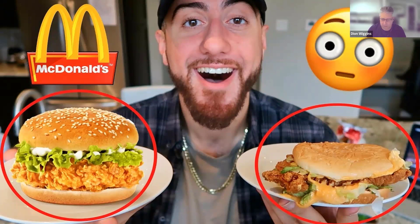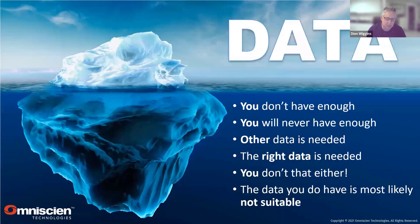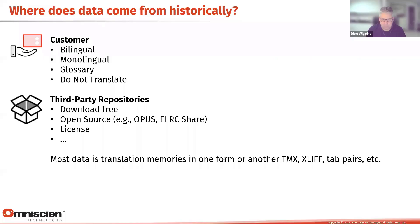When I talk about data, this will sound a little controversial: you don't have enough, and you will never have enough. Other data is needed — not just other data, the right data — and you don't have that either. The data you have is most likely not suitable overall. It'll help, but it's not enough. Even the biggest providers like IBM, with millions of sentences of data, simply don't have enough to play at the high-quality level needed for a big neural engine today.